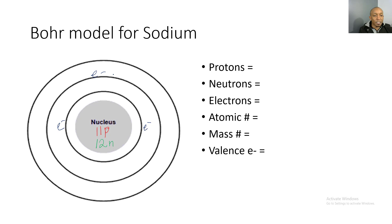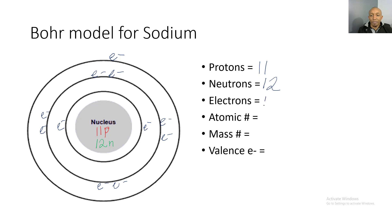We put two electrons on the first ring because that's all it can fit, then eight electrons on the second ring, and one on the third ring — because two plus eight plus one gives us 11 electrons. Now for our chart: 11 protons, 12 neutrons, 11 electrons, atomic number 11, mass number 23, and one valence electron. That's the Bohr model for sodium.